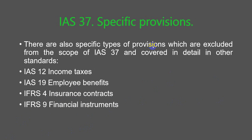There are also specific types of provisions which are excluded from the scope of IAS 37 and covered in detail in other standards: IAS 12 income taxes, IAS 19 employee benefits, IFRS 4 insurance contracts, and IFRS 9 financial instruments.